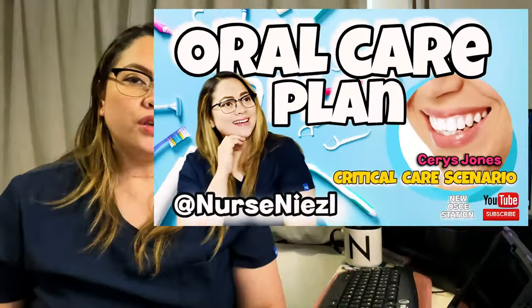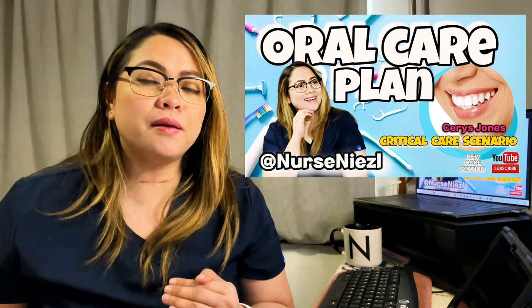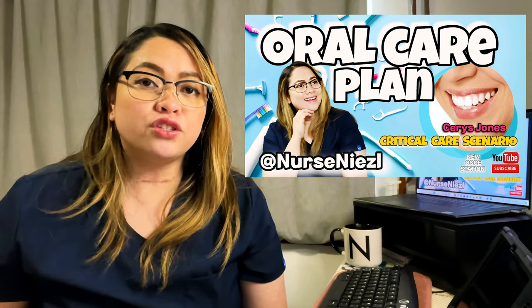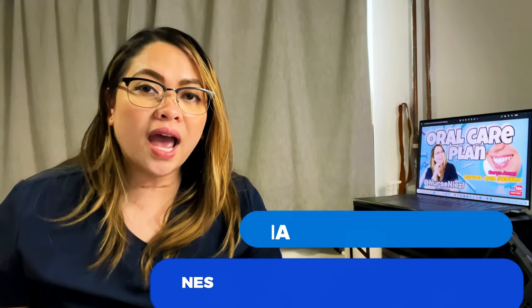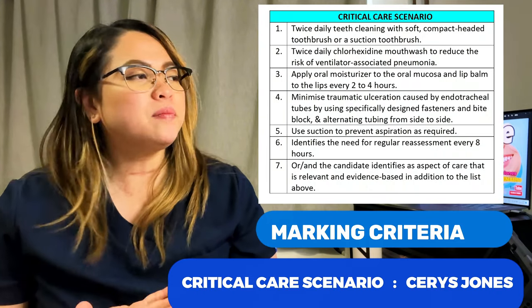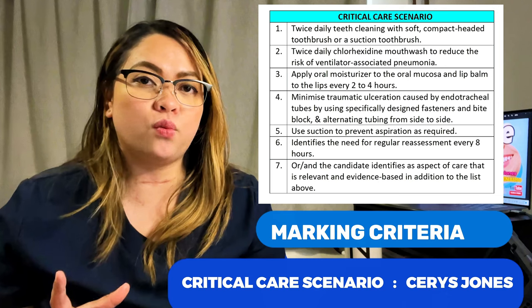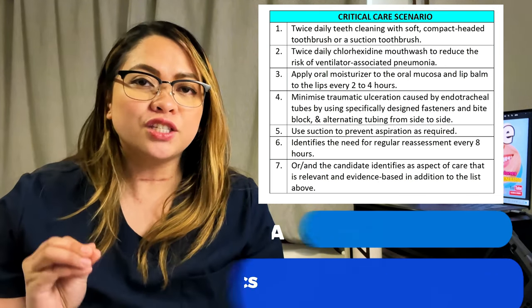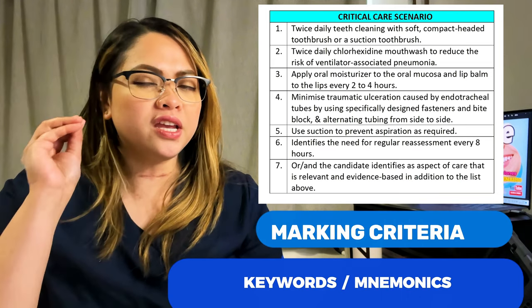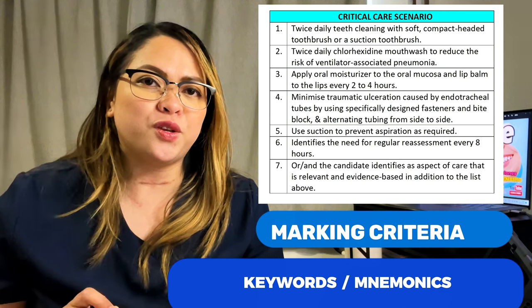This oral care plan is about the critical care scenario. You'll be given a scenario in which you make a plan for a patient named Saris Jones. The marking criteria has quite a few items, so we're going to deal with just the keywords — tackling them one by one — so it will be easier for you to remember the keywords and know what to write during your exam.